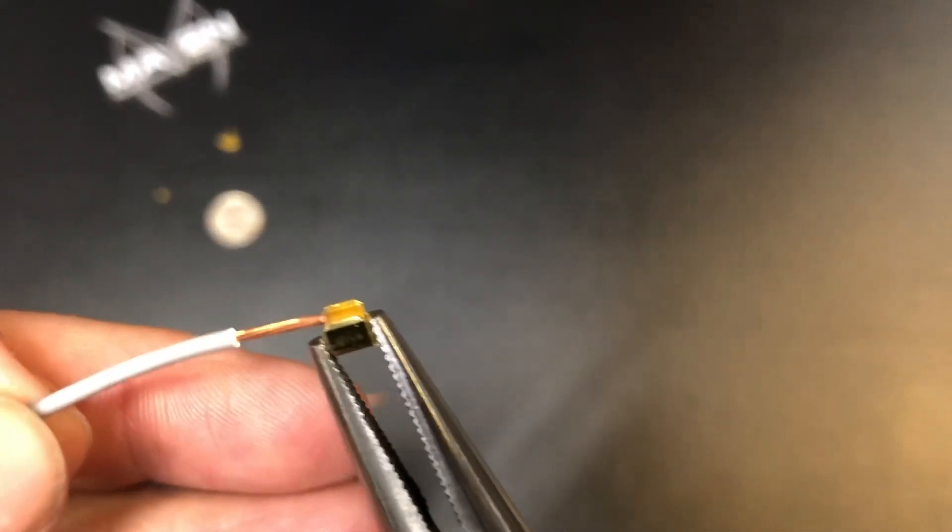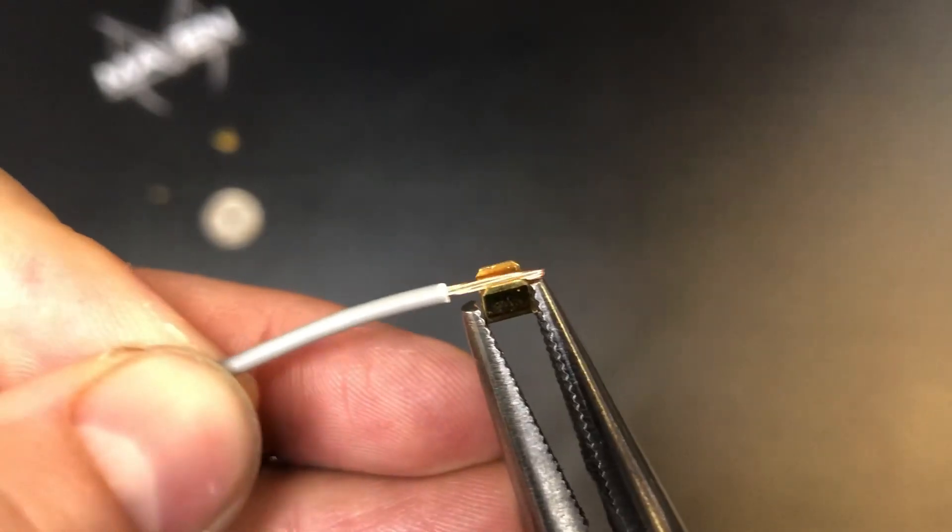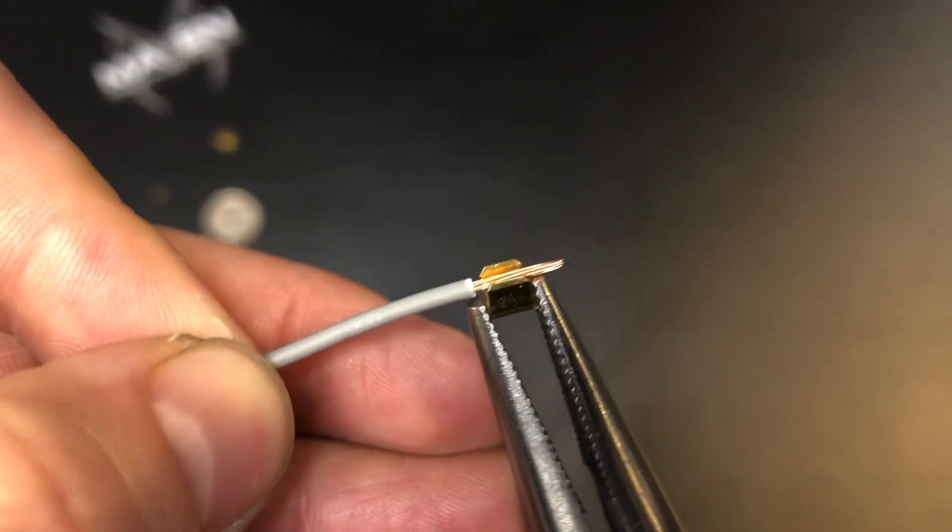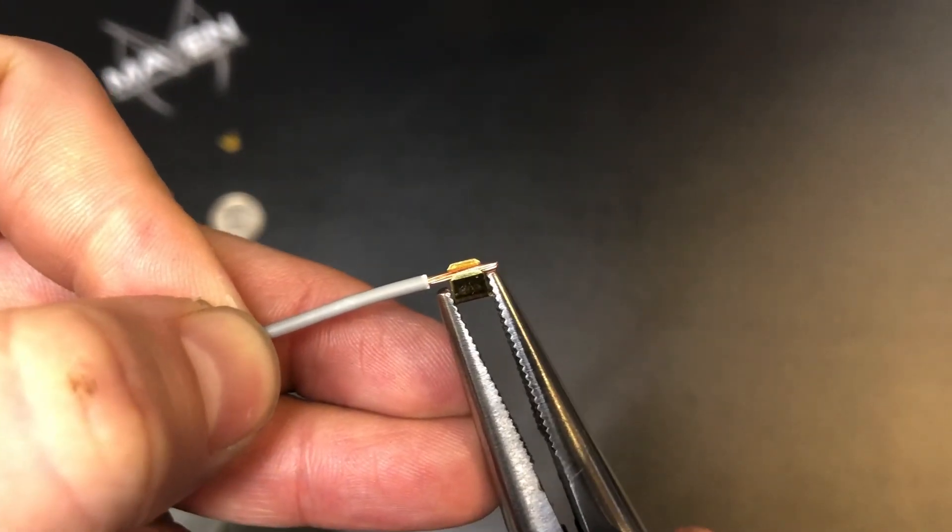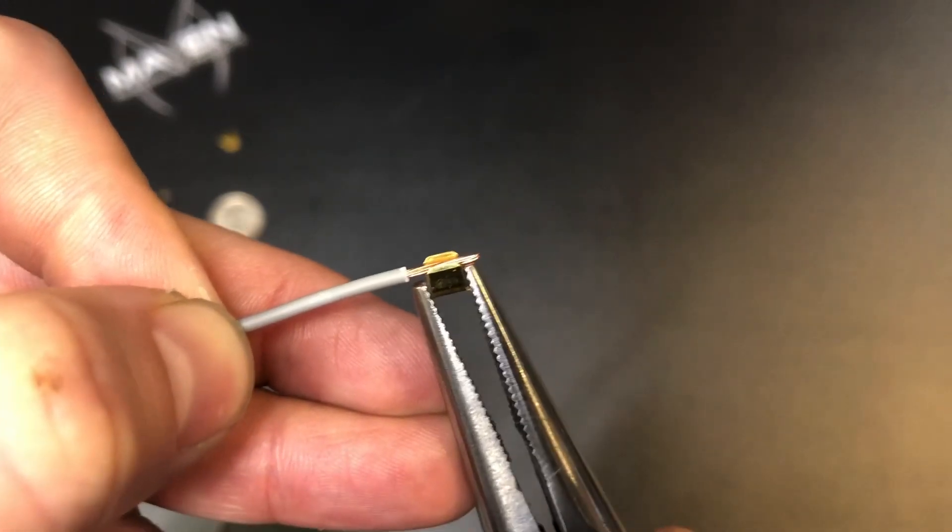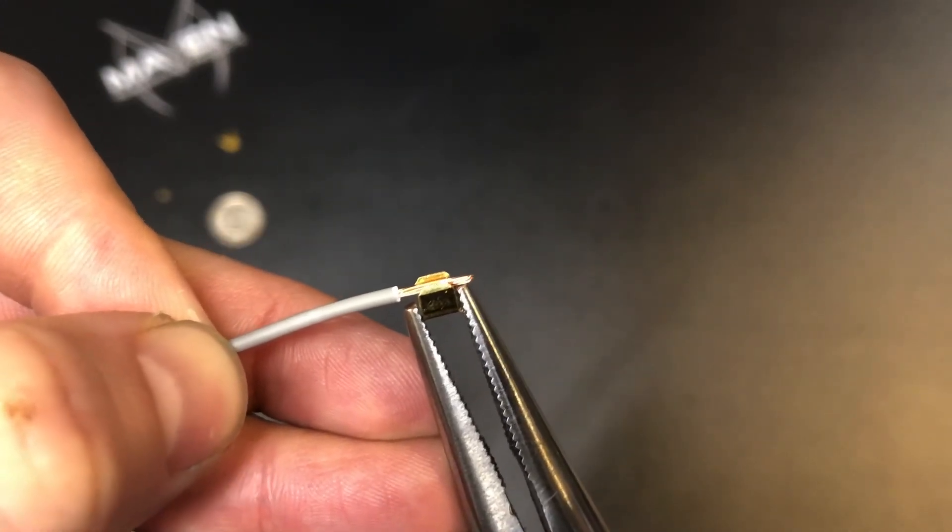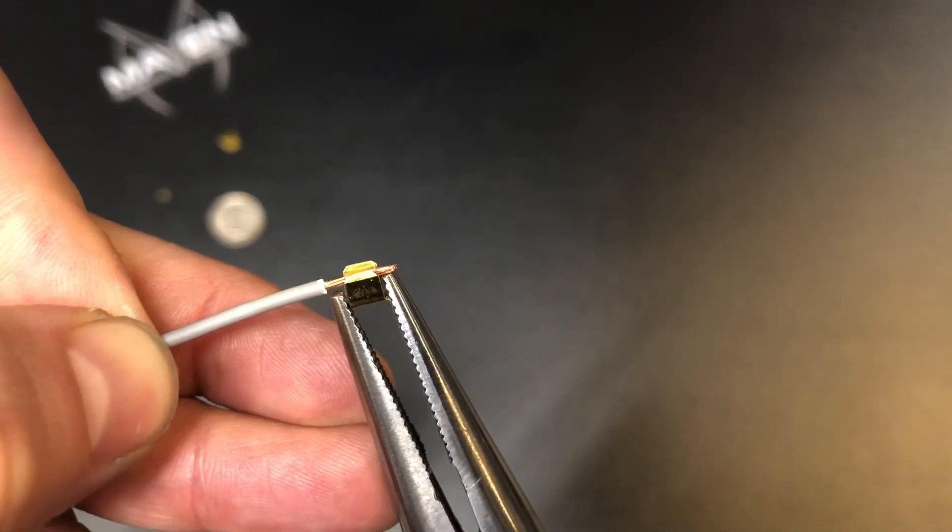Okay, so now you can kind of see what I was talking about. You see how the stripped section of the wire is longer than the width of the splice? That's about right. We'll go ahead and get these spliced together.